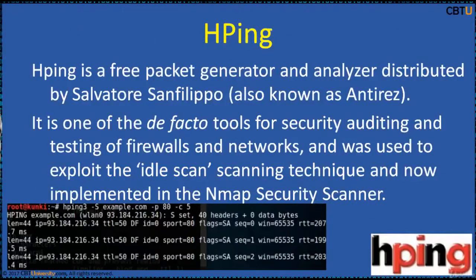HBing is a free packet generator and analyzer for the TCP/IP protocol, distributed by Salvatore San Filippo. It is also known as AntiRes. It is one of the de facto tools for security auditing and testing of firewalls and networks. It was used to exploit the idle scan technique and is now implemented in the nmap security scanner. HBing is scriptable using the TCL language and implements an engine for human-readable description of TCP/IP packets. HBing is useful for both system administrators and hackers.